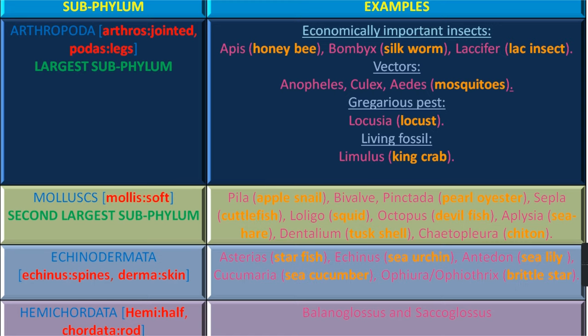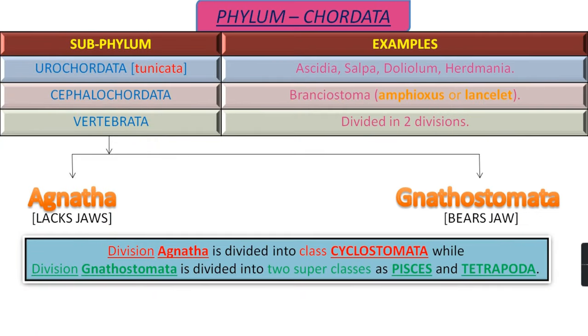Now, Hemichordata — where Hemi means Half and Chordata means Rod. It is a connecting link between the Chordata and Non-Chordata. The examples are Balanoglossus and Saccoglossus.